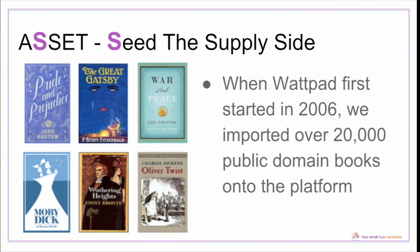Once you have defined the atomic unit in your product, you're facing the most daunting task of all: kick-starting the network. Why is it daunting? Because it's a chicken-and-egg problem. In Wattpad when we first started there were no stories — so who is going to come to read? And when there aren't any readers, who's going to come share their story? So what you need to do is move to the letter S in ASSET — and that is to seed your supply side.